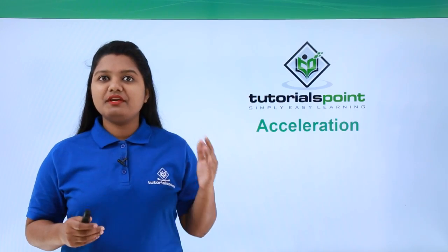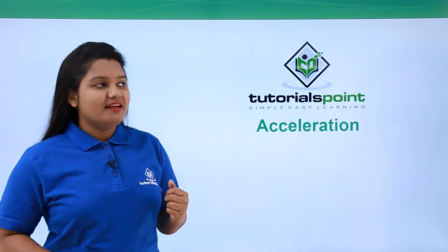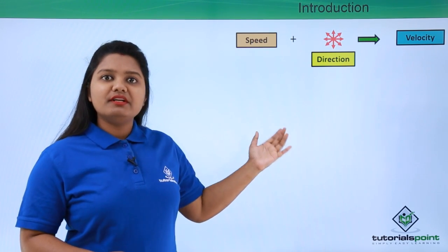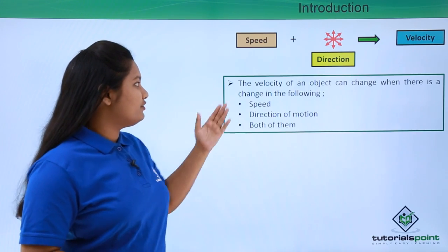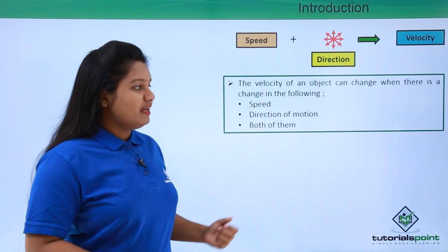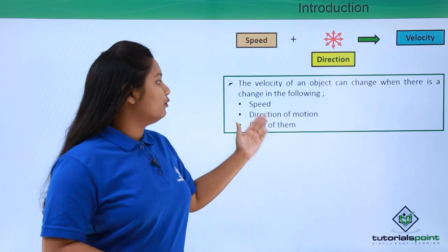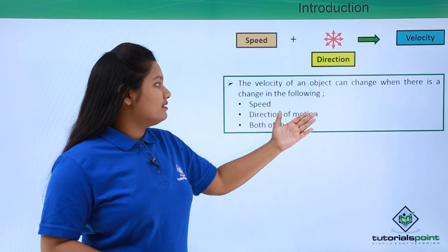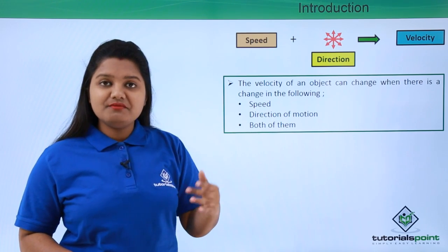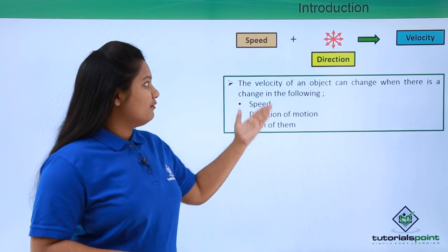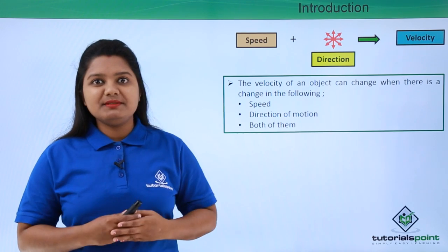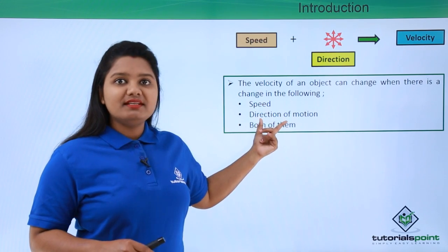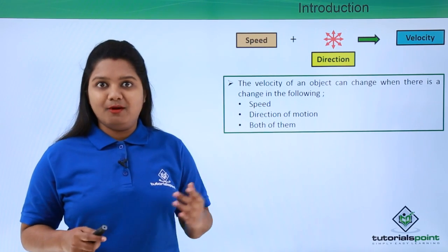Hello everyone, in this video we'll be discussing acceleration. Speed along with direction is called velocity. We have already studied that the velocity of an object changes whenever there is a change in speed, direction of motion, or both. Whenever a body changes its direction even with constant speed, its velocity has changed, because velocity is a vector quantity depending on both magnitude and direction.